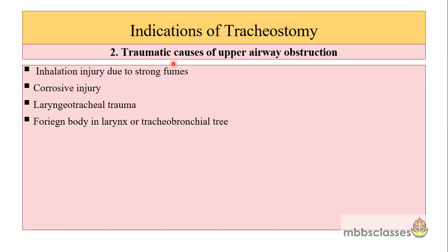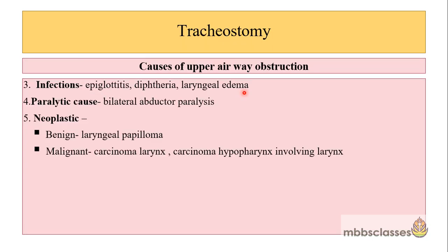Traumatic causes of acute upper airway obstruction can occur following inhalational or chemical injuries due to strong fumes, corrosive injury, laryngotracheal trauma which disrupts the framework of the larynx and trachea, or a foreign body in the larynx or tracheobronchial tree. Among infective causes there may be epiglottitis (also called supraglottitis), laryngeal diphtheria, and laryngeal edema. Among paralytic causes, bilateral abductor paralysis may cause acute stridor and may need tracheotomy.